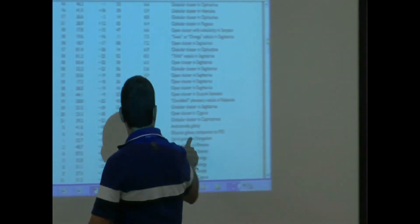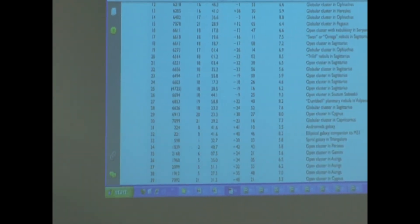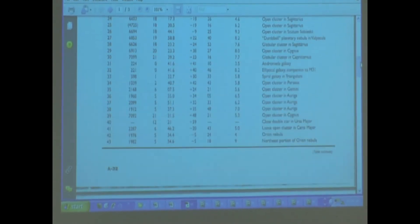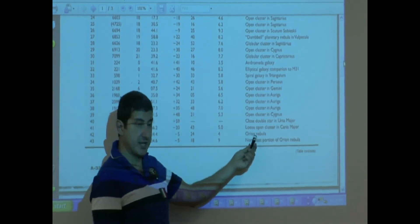What other objects? Elliptical Galaxy, spiral Galaxy, open cluster, open cluster, what else? M42 is famous, Orion Nebula.